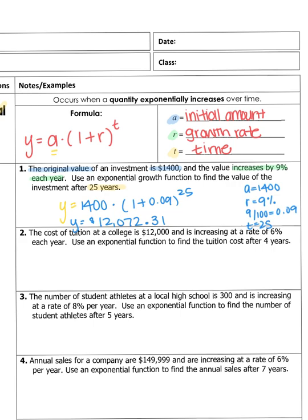Let's do one more together. The cost of tuition at a college is $12,000 — that's the initial amount — and it's increasing at a rate of 6% each year. We want to find the tuition cost after four years. So A is $12,000, r is 6% which converts to 0.06, and our time t is four years.